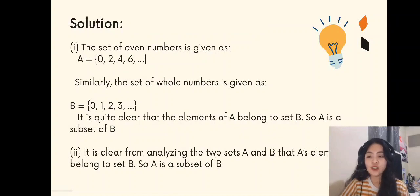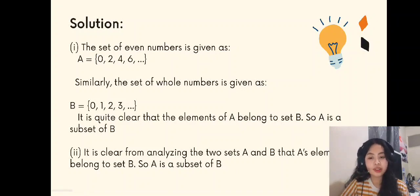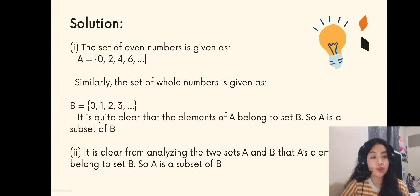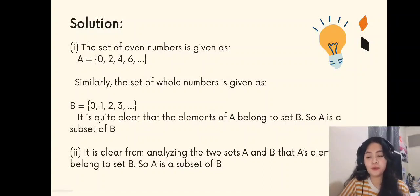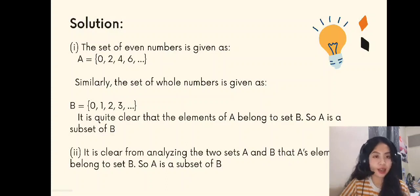As a solution, number 1: the set of even numbers is given as set A equals {0, 2, 4, 6, ...}. Similarly, the set of whole numbers is given as set B equals {0, 1, 2, 3, ...}. It is quite clear that the elements of A belong to set B, so A is a subset of B. Number 2: It is clear from analyzing the two sets that A's elements belong to set B, so A is a subset of B.